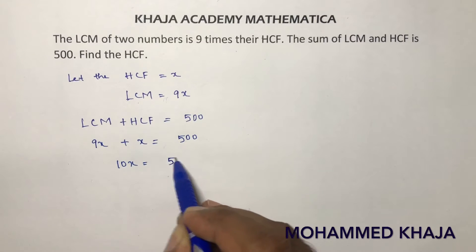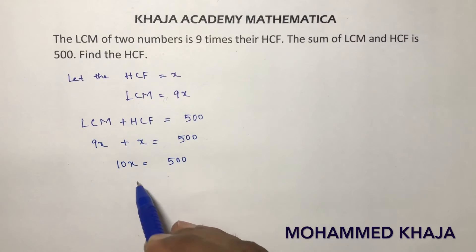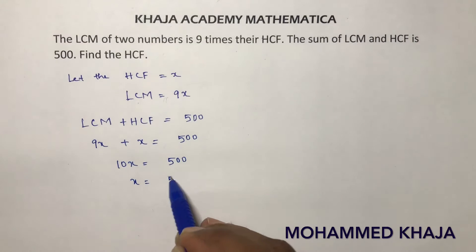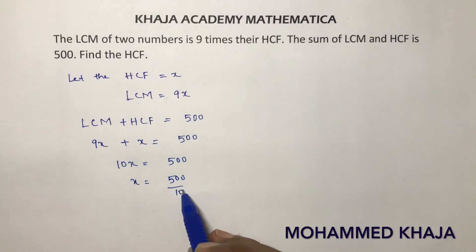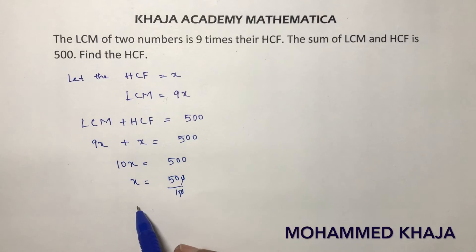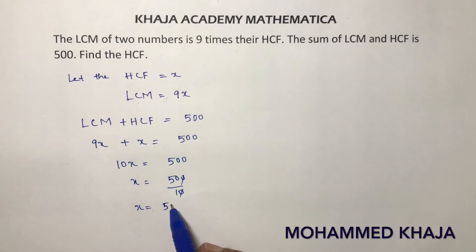10x equals 500. So, x equals 500 divided by 10. The value of x is 50.